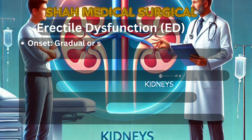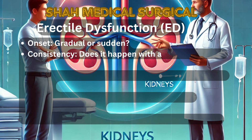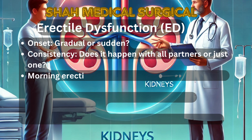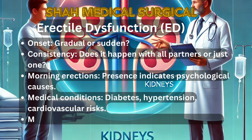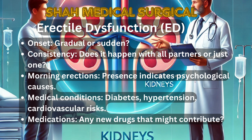Erectile dysfunction (ED). When assessing erectile dysfunction, ask the following questions: 1. Onset — is the dysfunction gradual or sudden? 2. Consistency — does it happen with all partners or just one? 3. Morning erections — are morning erections present? Their absence may suggest psychological causes. 4. Medical conditions — are there any underlying conditions like diabetes, hypertension, or cardiovascular diseases? 5. Medications — are any new medications contributing to the issue?